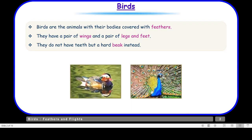Birds are animals with their bodies covered with feathers. They have a pair of wings and a pair of legs and feet. They do not have teeth but a hard beak instead. So birds are animals with feathers, they have wings, claws, and they have a beak as well.